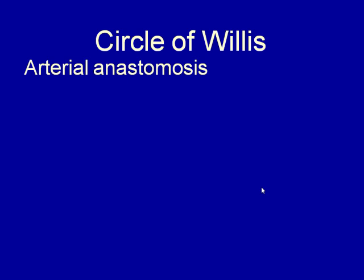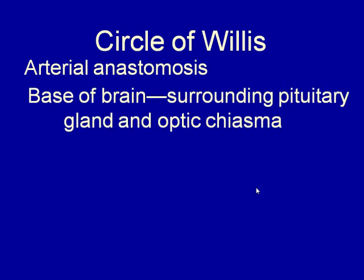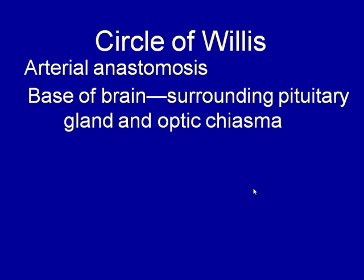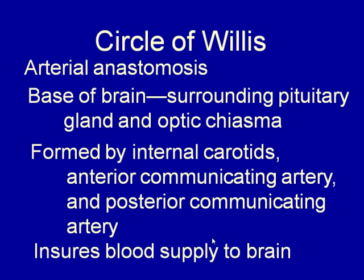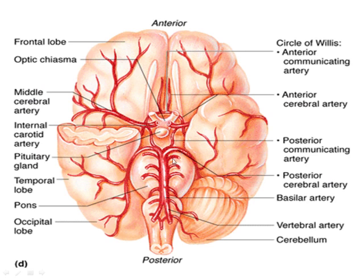The circle of Willis is a special anastomosis of arteries that feed the brain — a circle of blood vessels at the base of the brain surrounding the pituitary gland and optic chiasma. It is formed by the internal carotids, anterior communicating artery, and posterior communicating artery. It ensures there is always a blood supply to the brain: if one vessel is damaged, blood can still reach any part of the brain via this circle.